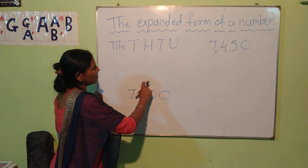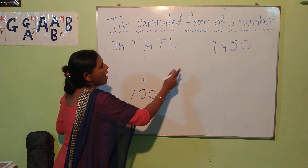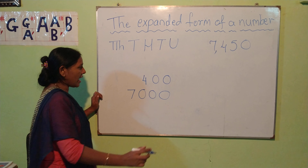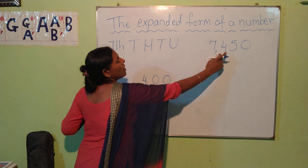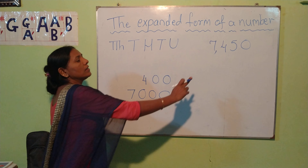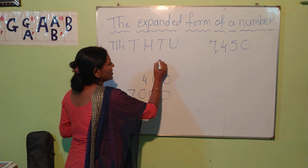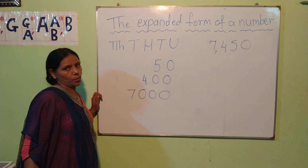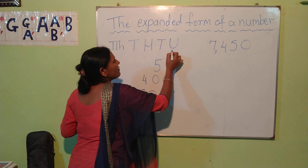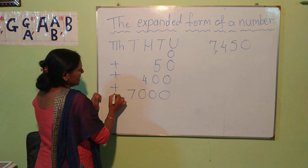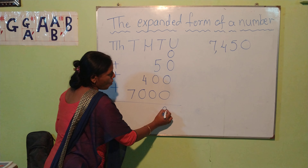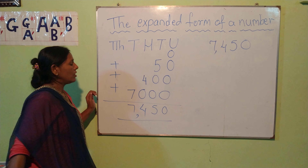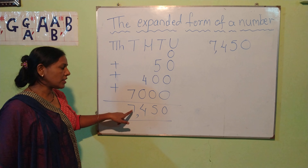Units, tens and hundreds — we will write the value here. After 4, how many numbers? 1, 2 — so two zeros. After 5, how many numbers? Only one — so one zero. Then 0 is left. When you add it all: 0, 5, 4, 7 — when we bring it back, what number do we get? 7,450.